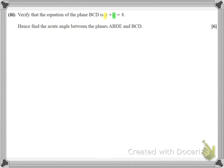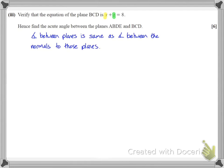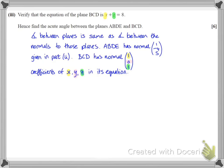Hence, find the acute angle between the planes ABDE and BCD. To find the angle between planes we find the angle between their normals. Plane ABDE has normal 1, minus 4, 5 from part 2. For plane BCD with equation x plus z equals 8, the normal is just the coefficients of x, y, and z: since there are no y terms, the normal is 1, 0, 1. We then use the cosine formula: cos theta equals the dot product of the two normals divided by the product of their lengths.